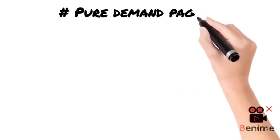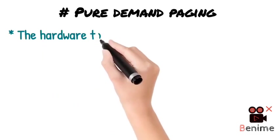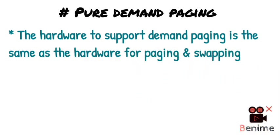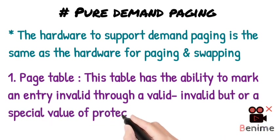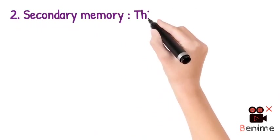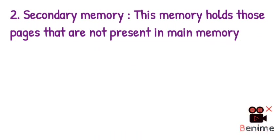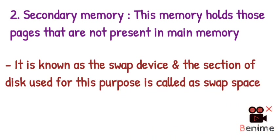With pure demand paging, there are no page faults at the start — a page is never put into memory until it is actually needed. The hardware that supports demand paging is the same as that for swapping or paging. We need a page table with entries that contain valid or invalid bits, or special protection bit values, so we know whether each entry is valid or invalid. Secondary memory — typically a high-speed disk — holds pages not present in main memory. This is called the swap device, and the space used for this purpose is called swap space.